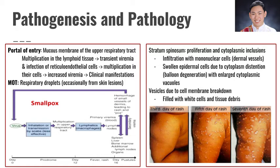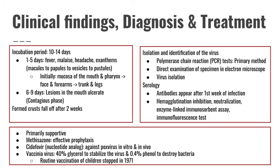Specifically in the skin, there would be infiltration with mononuclear cells and then swollen epidermal cells due to cytoplasm distension — that's called balloon degeneration. Vesicles appear because the cell membrane breaks down and is filled with white cells and tissue debris. Clinically, there would be a 10 to 14-day incubation period, and then fever, malaise, headache, and rashes starting from macules, then papules, to vesicles, and then pustules.